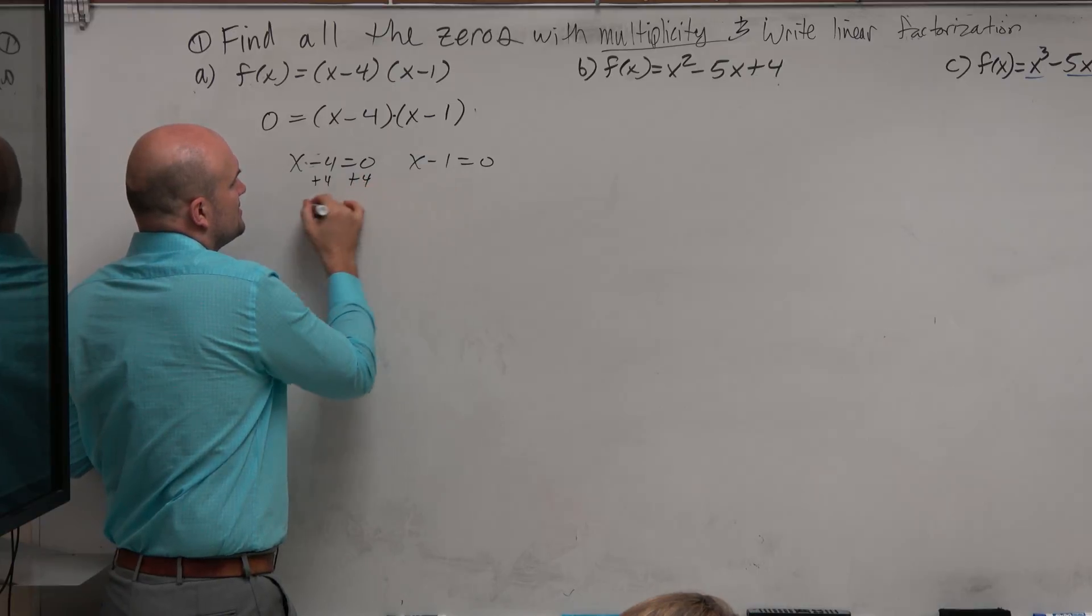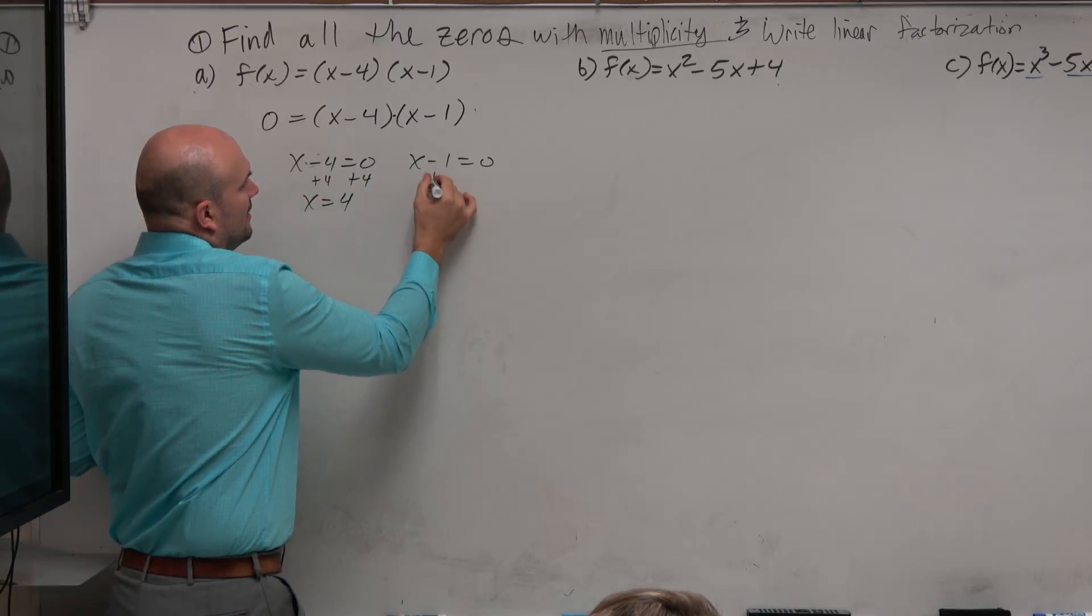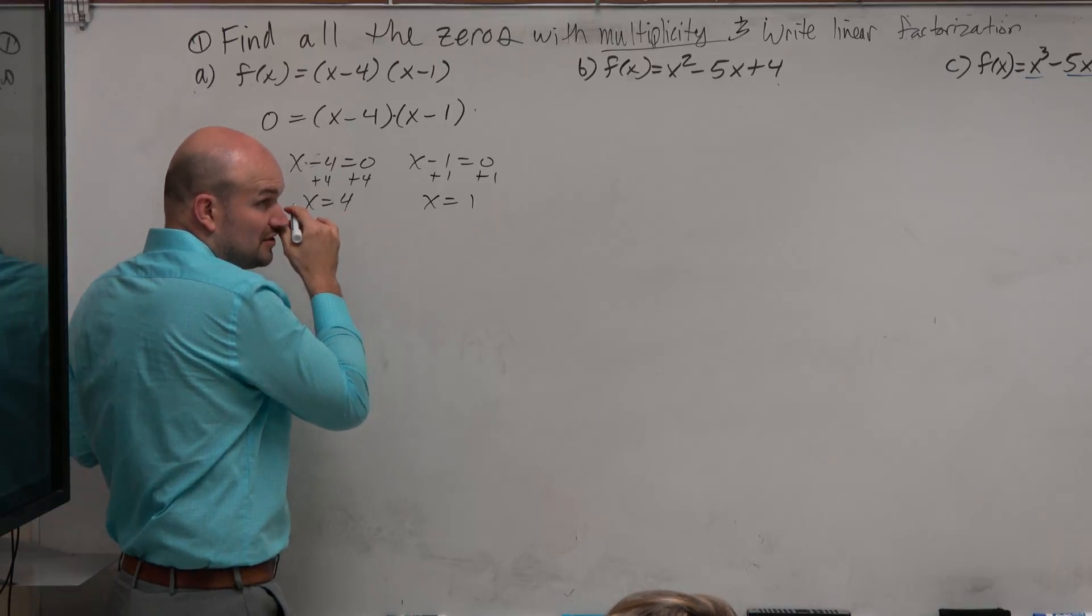Therefore, adding 4 on both sides, x is equal to 4. Adding 1 to both sides, x is equal to 1. So those are the zeros.